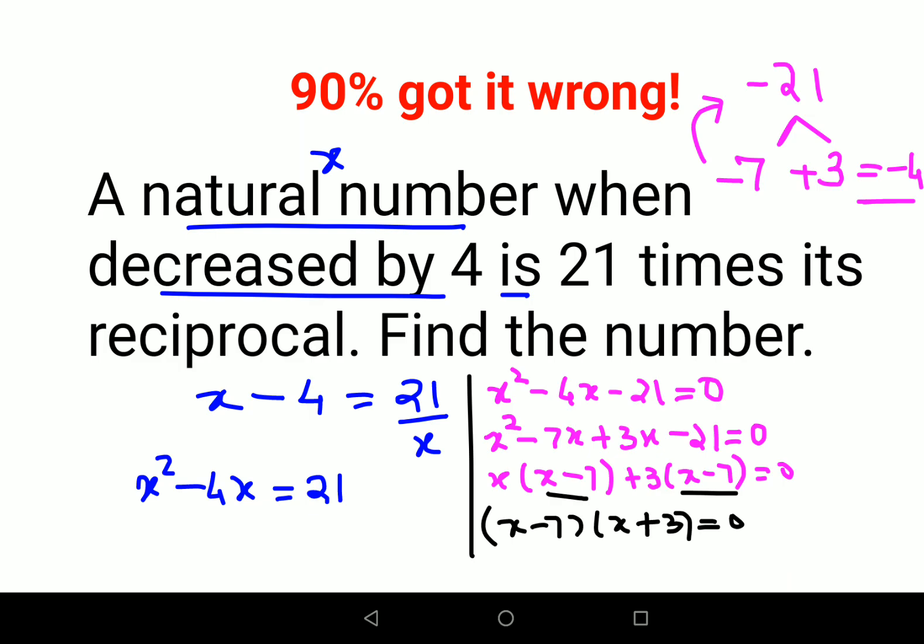So now I know that the value of x can be x minus 7 equals 0 or x plus 3 equals 0. So x can be either 7 or it can be minus 3.